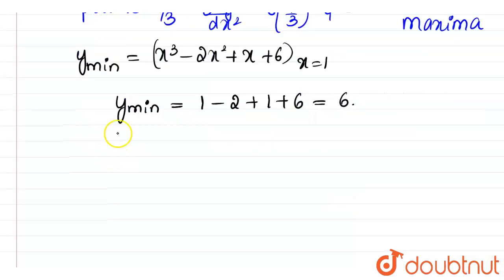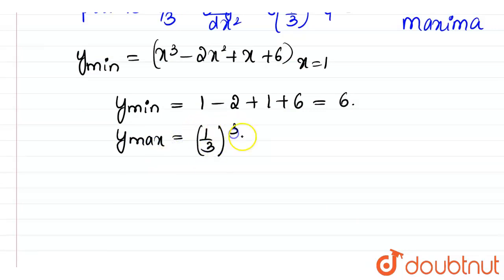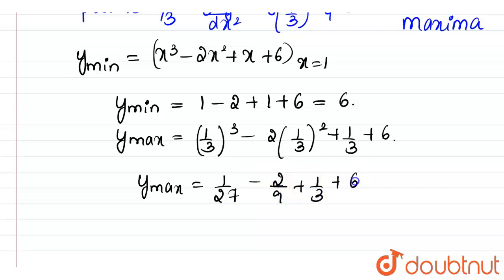Similarly, y maximum will be occurring at x is equal to 1 by 3 which will be 1 by 3 the whole cube minus 2 into 1 by 3 the whole square plus 1 by 3 plus 6. So y maximum will be equal to 1 by 27 minus 2 by 9 plus 1 by 3 plus 6. So this will be the minimum value and maximum value of the function.